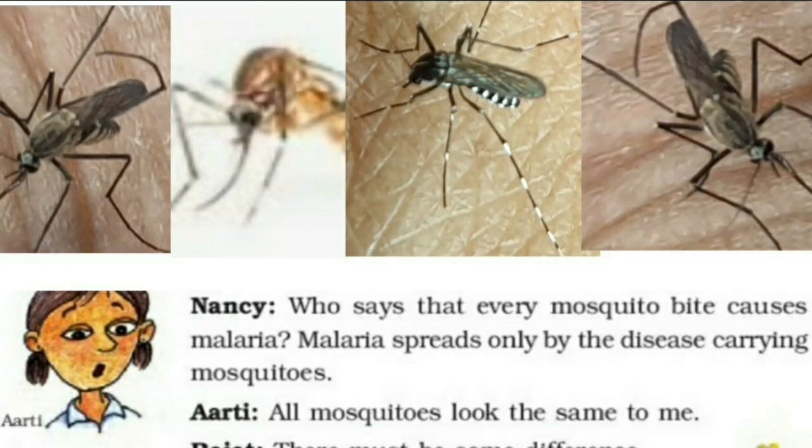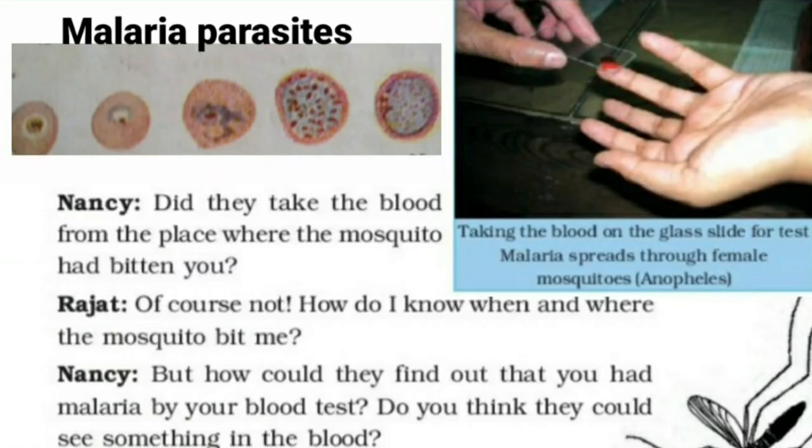Nancy asked: did they take the blood from the place where the mosquito had bitten him? Rajat replied of course not — how would he know when and where the mosquito bit him? Nancy then asked: but how could they find out he had malaria from a blood test? Do you think they could see something in the blood?